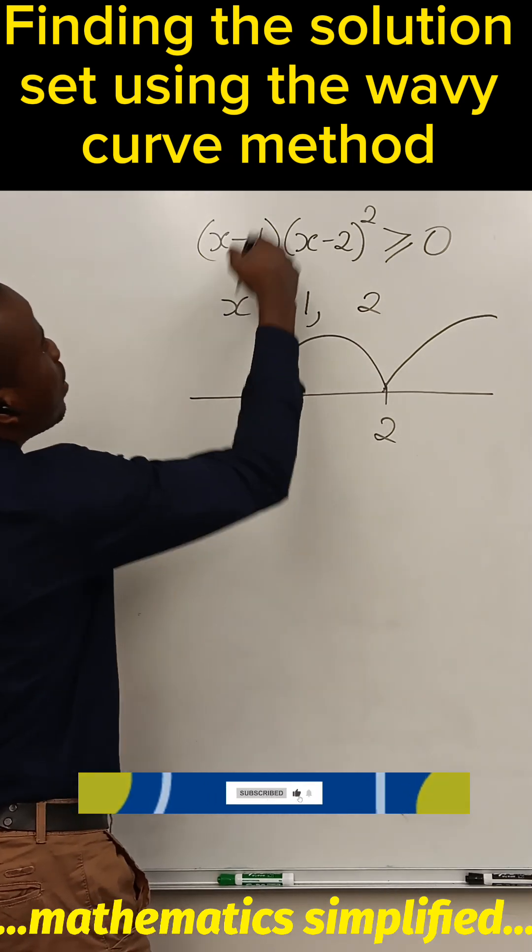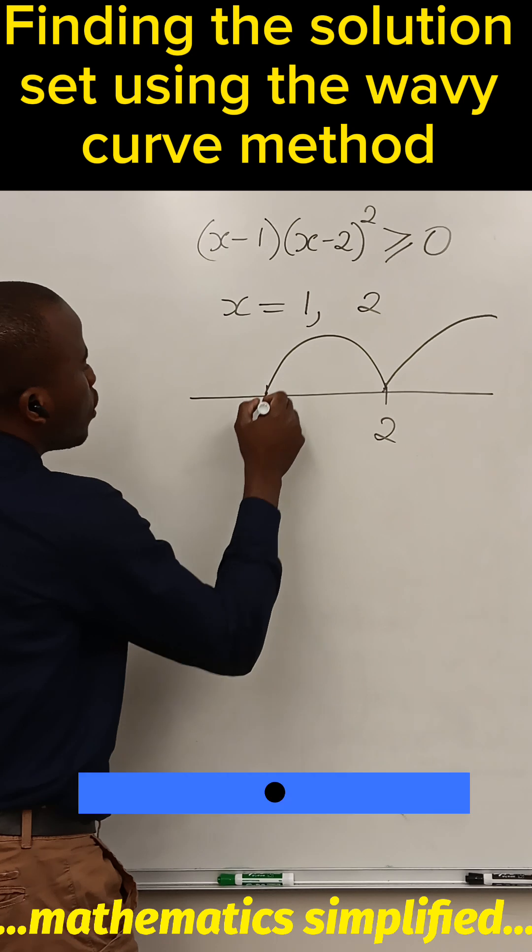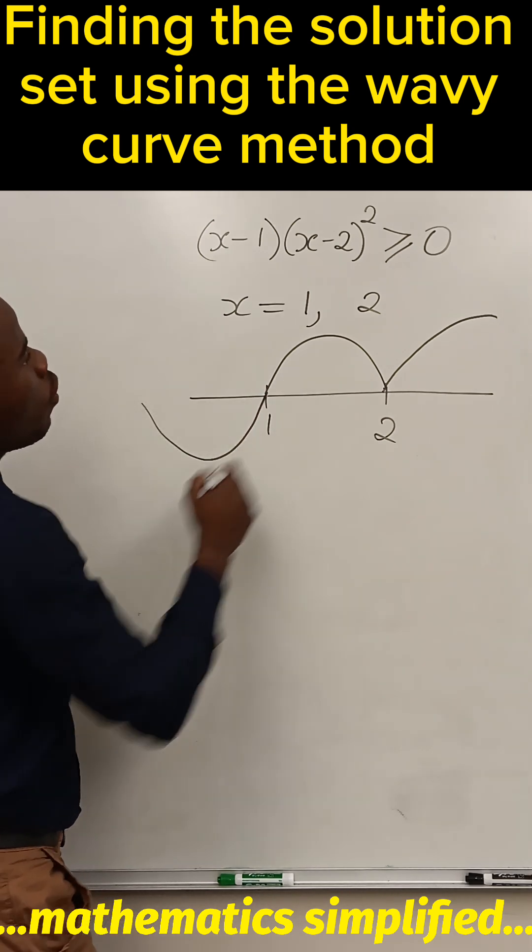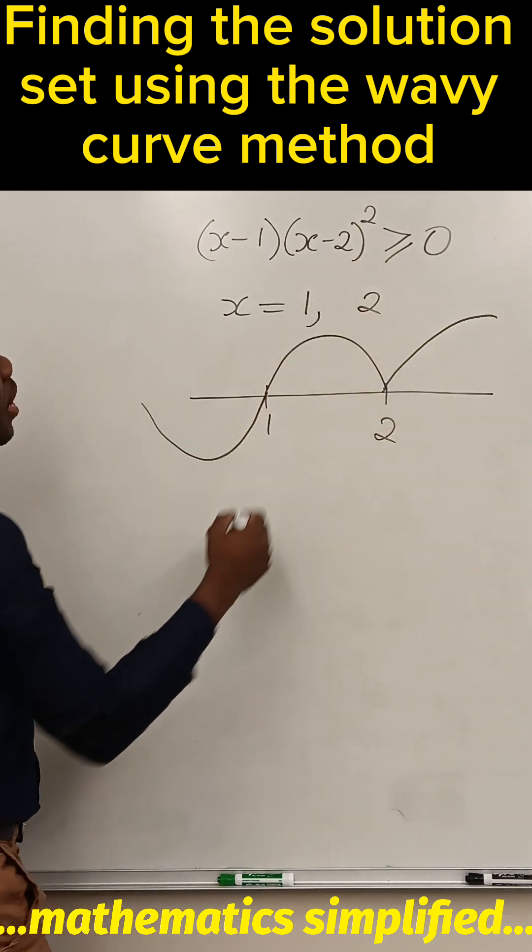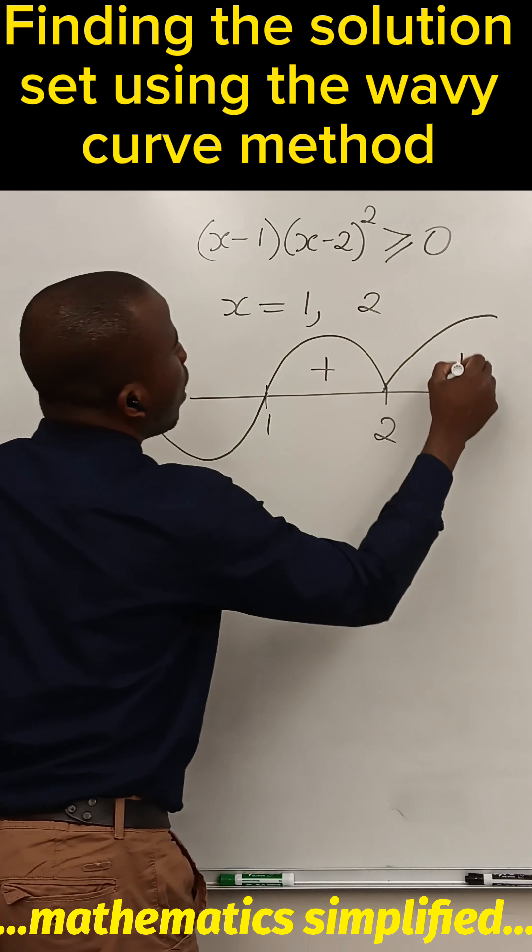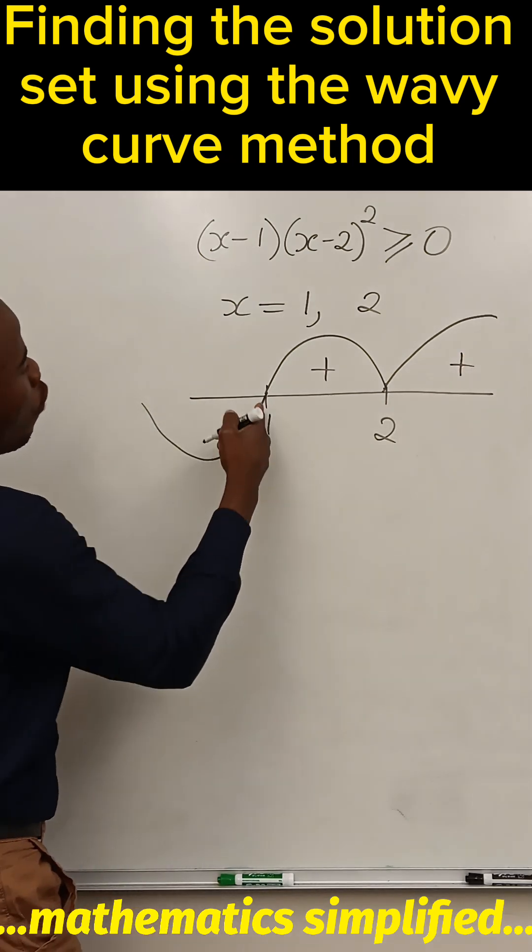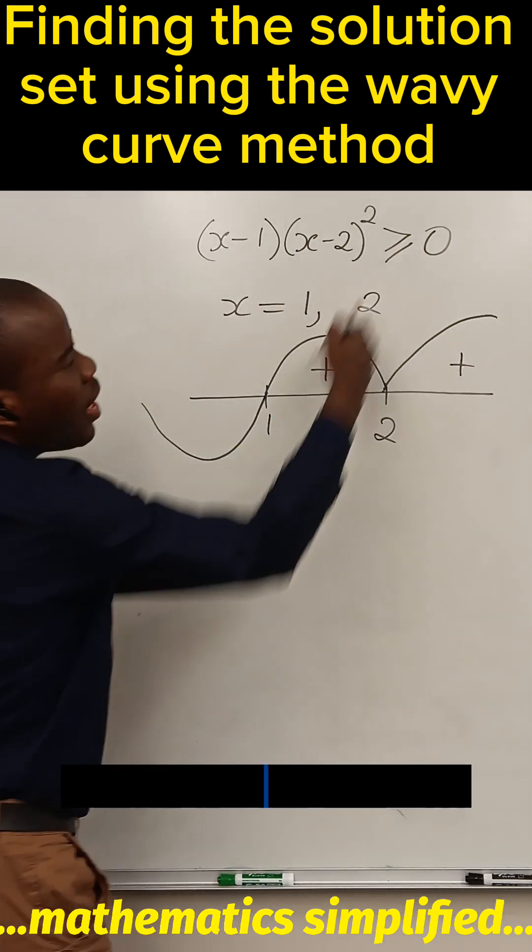At 1, the power is odd, so it crosses. So the values of x for which is greater than zero are this and this. Of course, 1 is included because they have to be greater than or equal to zero.